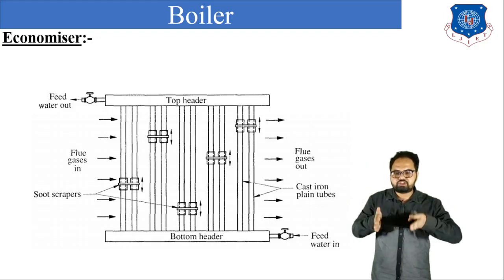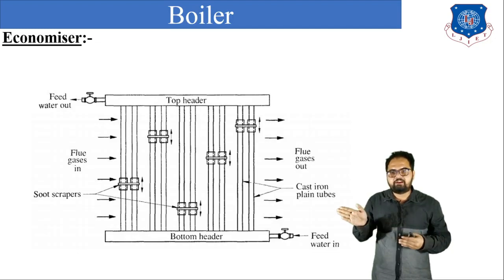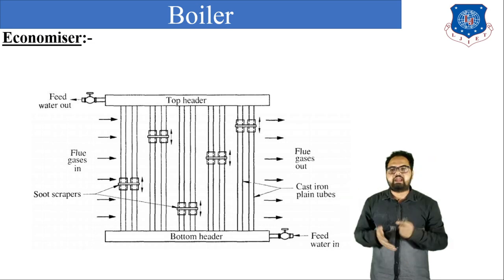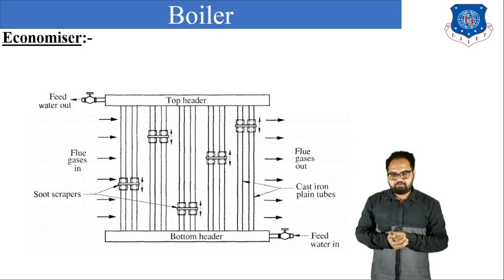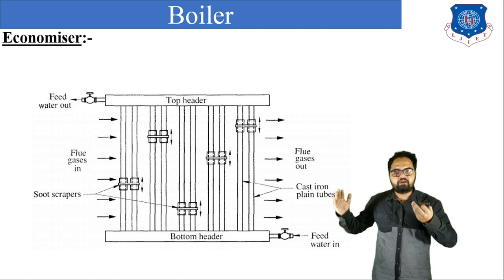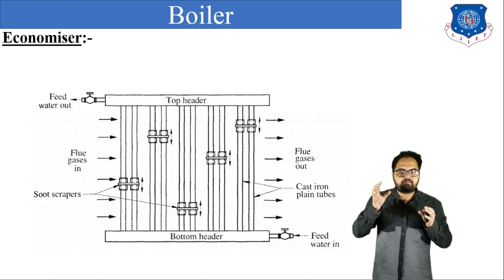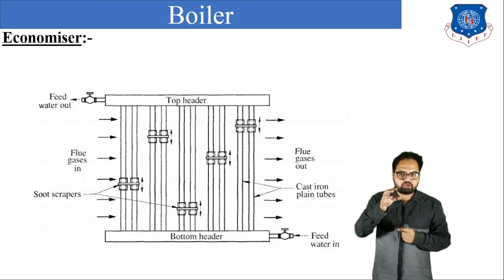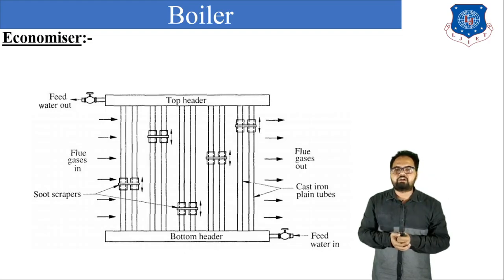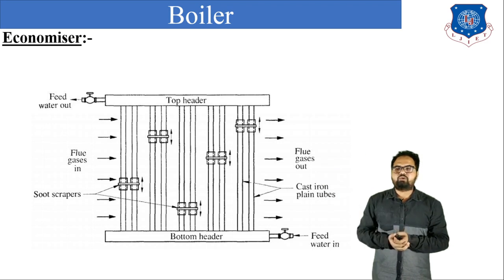A header is a big diameter pipe through which a number of small diameter pipes come out. From the right side, feed water is inlet inside the bottom header, and after that, the water enters inside the header and distributes into each and every tube. All the water is collected at the top header. When the water travels through these pipes, the waste flue gases which come directly from the superheater enter inside the economizer and come in contact with the water tubes. The water receives heat from the flue gases, temperature of water increases, and all the hot water is collected at the top header, then transferred to the boiler.